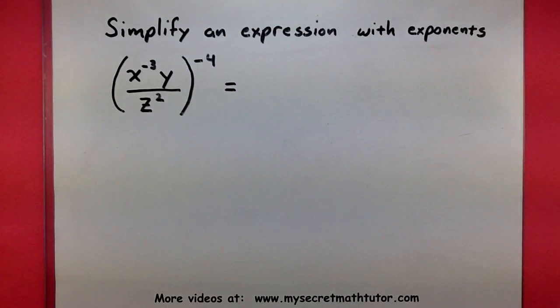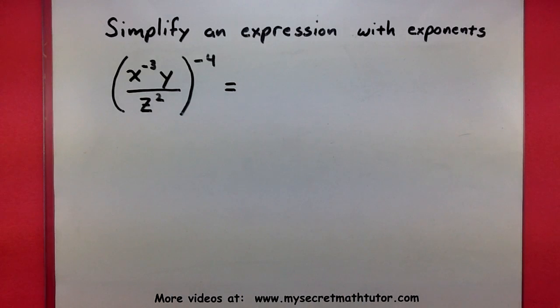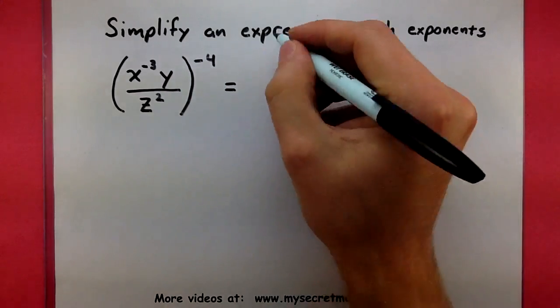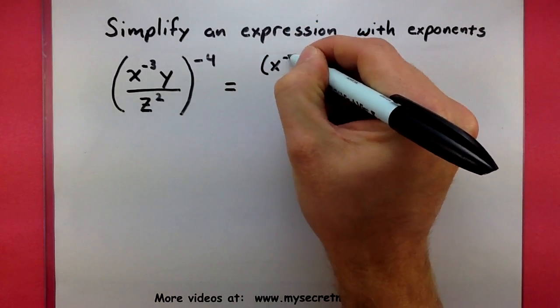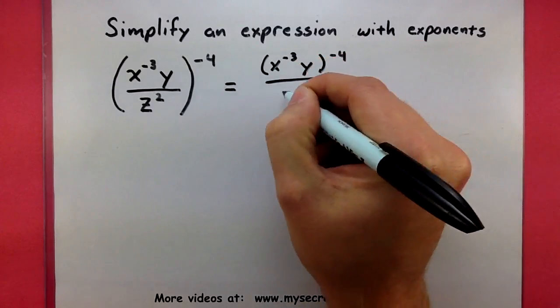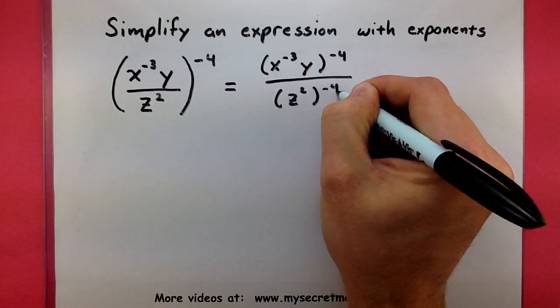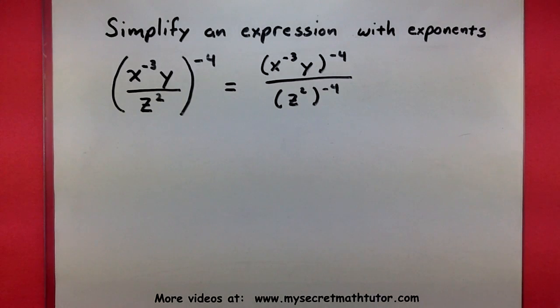Alright, the first rule I'm going to use has to deal with this fraction and the exponent of negative 4. If you have a fraction raised to a power, you can give that power to the top of the fraction and to the bottom. There we go, so the negative 4 is on the top and on the bottom.